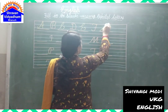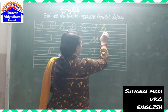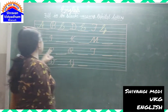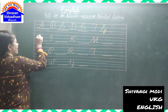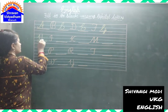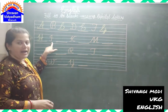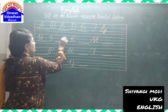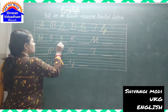G for Grabs. H for Ham. I for Ice Cream. J for Joker.